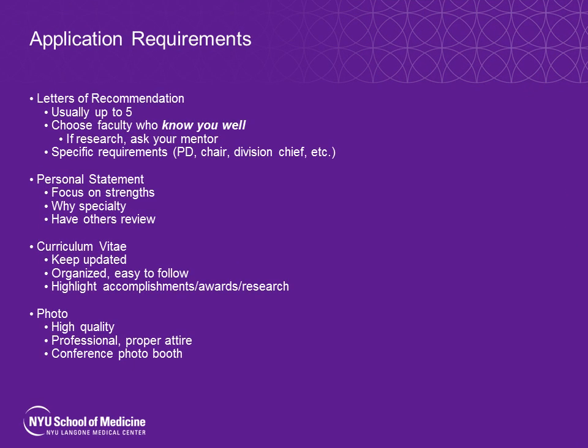In terms of specific application requirements, in general you'll need to submit letters of recommendation, write a personal statement, submit a CV, and provide a photo. For letters of recommendation, Fellowship Council and ERAS may have different limits, but in general up to five letters. This is a very important portion of your application, so plan ahead in terms of who will be your letter writers, as they carry a great deal of weight. You definitely want someone who knows you well and can speak to that effect — not just a generic letter that rehashes your CV. If you've done research, it's a good idea to ask your research mentor or PI to be one of those letter writers, as they likely know your personality and work ethic well.